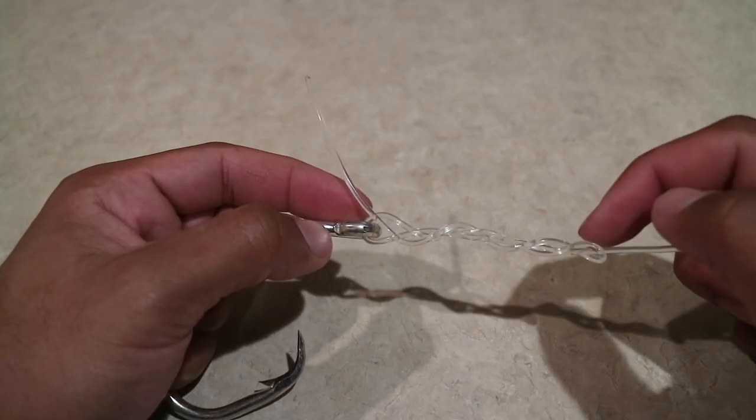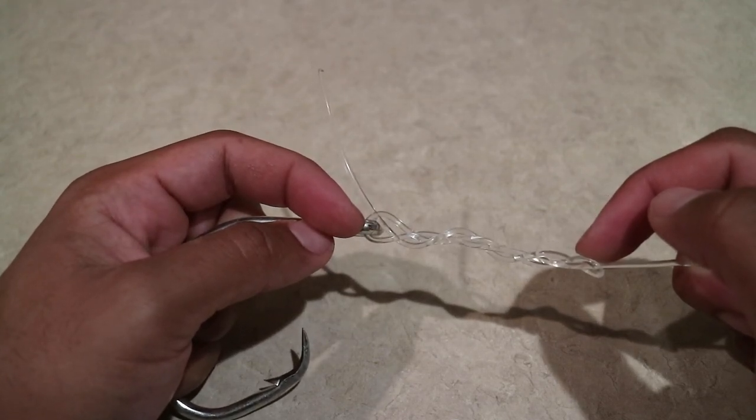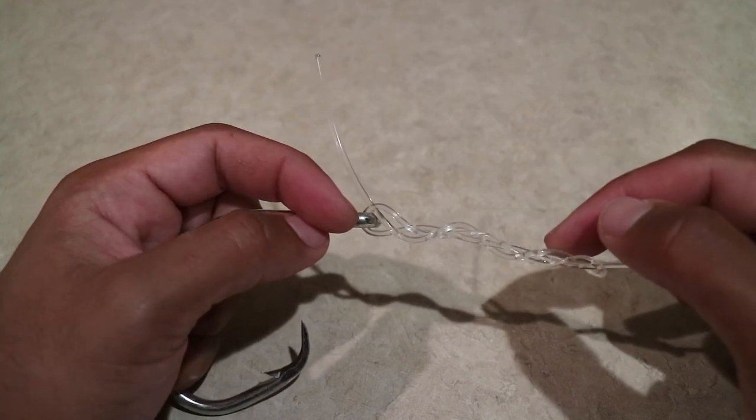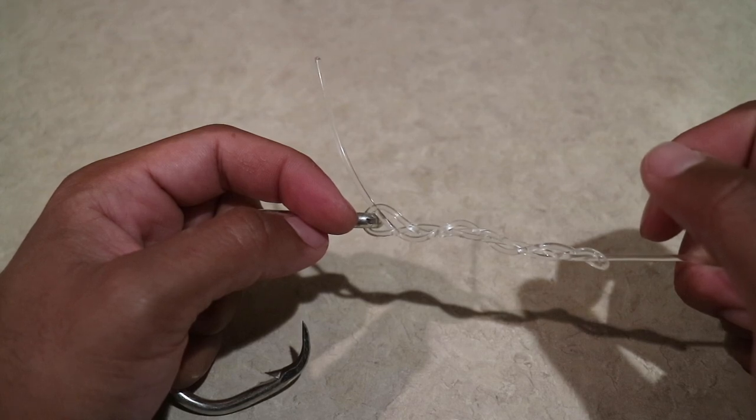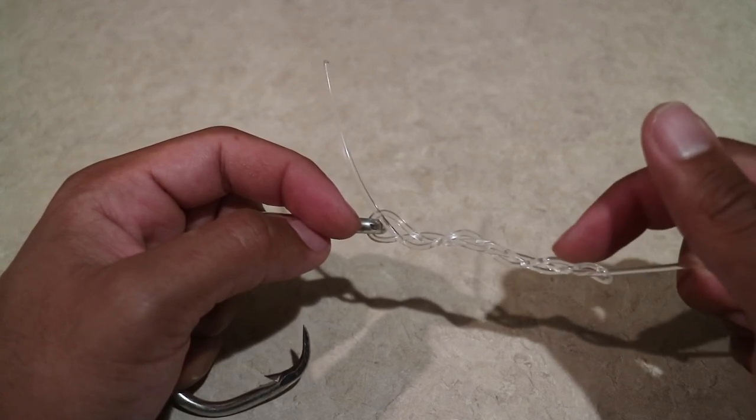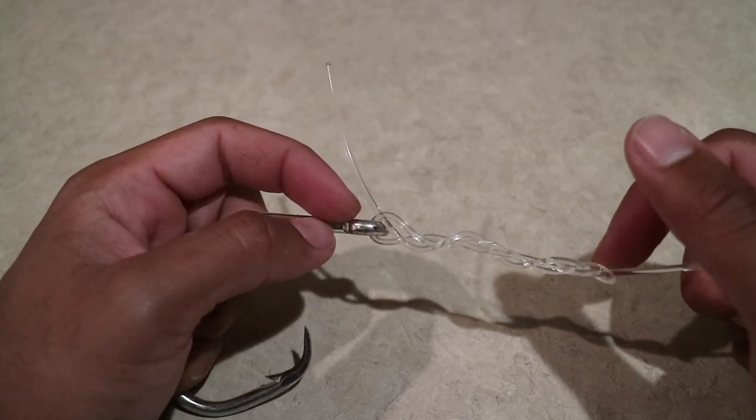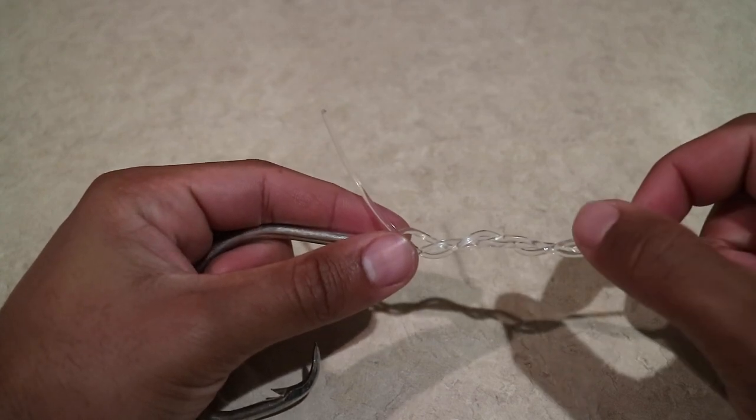And now to make this part go all the way down here smoothly, I like to put a little bit of spit on here. It makes the knot form so much better. Because if you don't, there's going to be a lot of tension right here and it's going to be a lot harder to form this knot. So let's put a little spit on there and I'll show you guys how easy it is to get this knot to form.